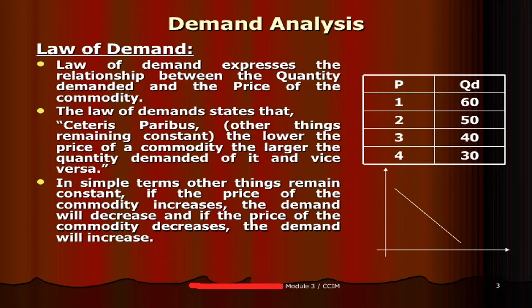We are not considering factors other than price. The law of demand is the relationship between quantity demanded and price of the commodity. In simple terms, other things remaining constant: if the price of the commodity increases, the demand will decrease, and if the price decreases, the demand will increase.